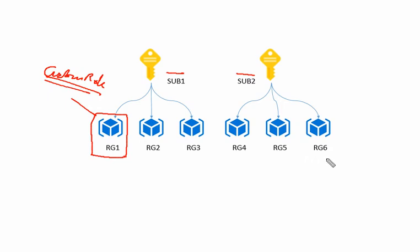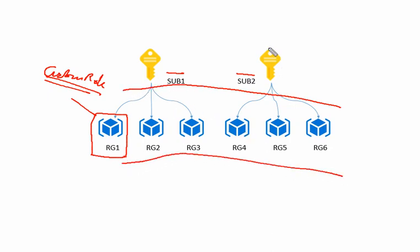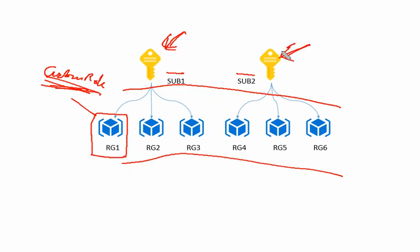That means we can apply the custom role on whatever resource groups are available in both subscriptions — all resource groups. The best solution is to apply it at the subscription level, which will automatically be applied on all resource groups in subscription 1 and subscription 2. Applying at the subscription level reduces the administrative efforts needed.